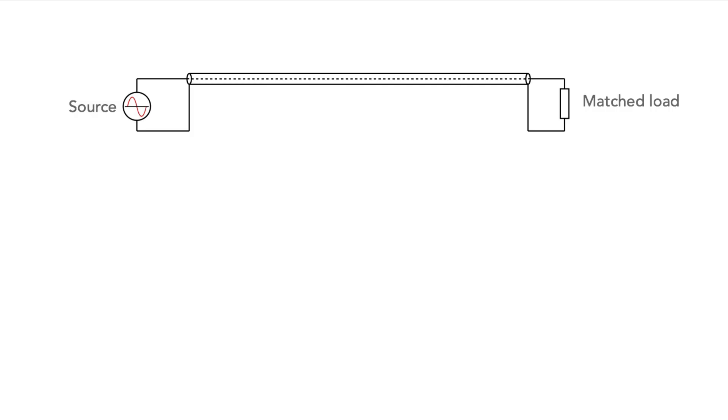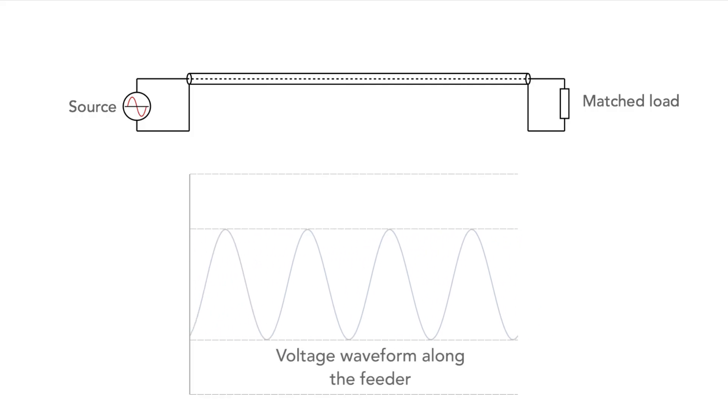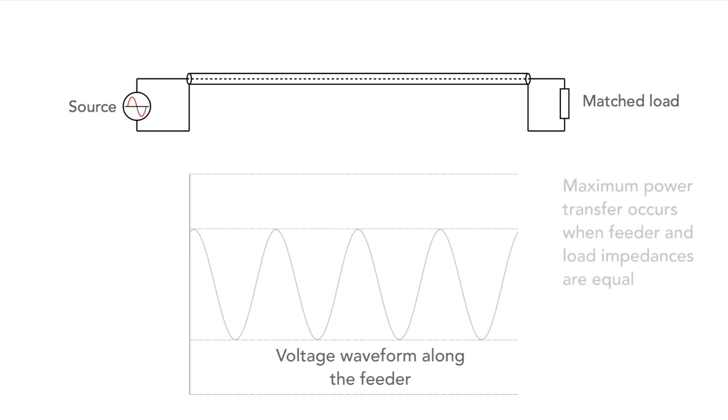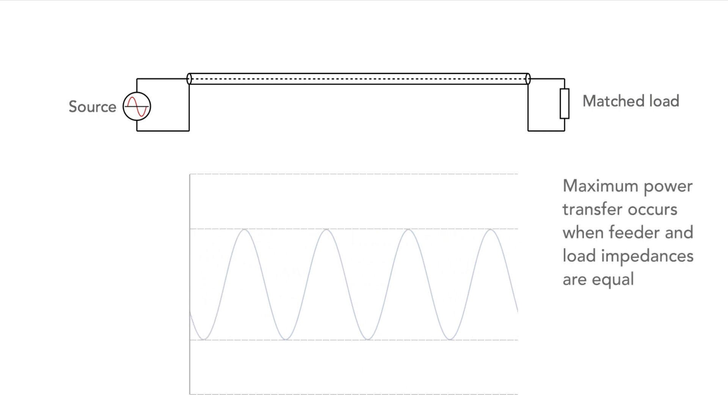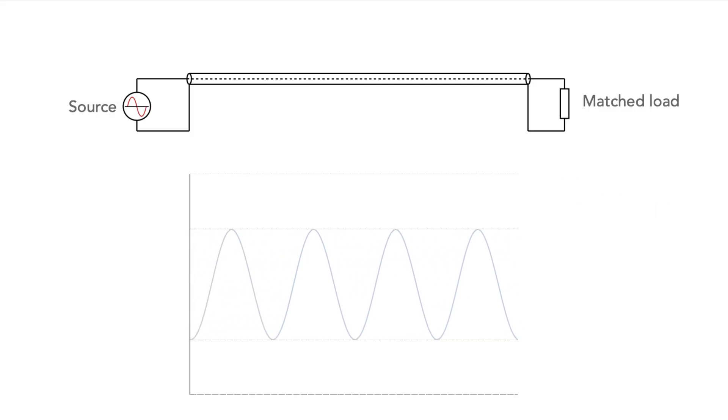Let's see how this works out. If we have a perfectly matched load as we have here the power travels along the feeder and we can see the voltage waveform here. As we have a matched load all of the power is absorbed and none is reflected. There is no reflected voltage waveform. This is the ideal case for most applications.